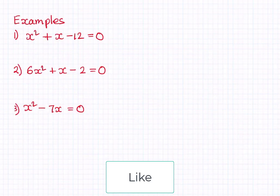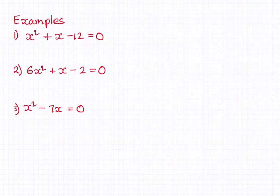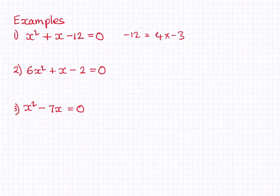Let's look at three more examples, then I'll give you some practice questions. You can pause the video and have a go at them first. For this example, we need to find the product and the sum. The product is minus 12. Two numbers that multiply to minus 12 and add to positive 1 are 4 and minus 3, since 4 times minus 3 is minus 12 and 4 minus 3 is 1. So the factorized form is (x + 4)(x − 3) = 0.